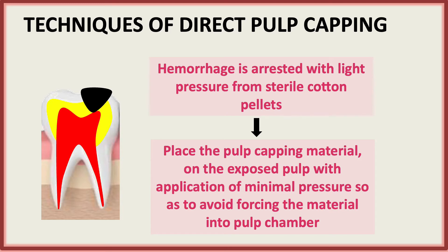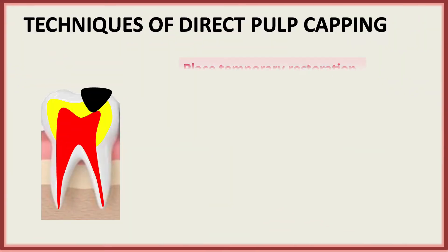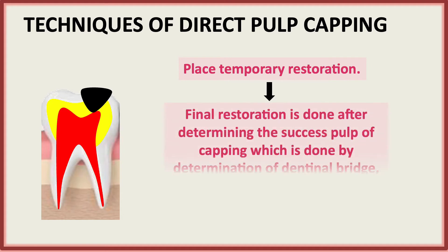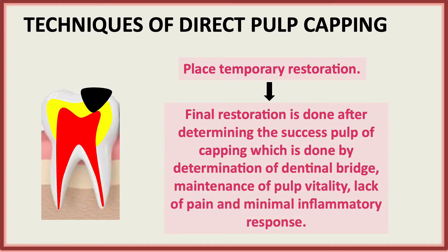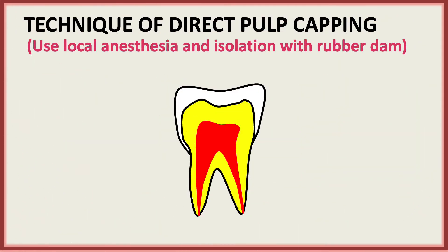If hemorrhage occurs, it should be arrested with light pressure from sterile cotton pellets. Place the pulp capping material on the exposed pulp with minimal pressure, so as to avoid forcing the material into the pulp chamber. After that, place a temporary restoration. Final restoration is done after a dentinal bridge is formed and pulp vitality is maintained — there is a lack of pain and minimal inflammatory response.